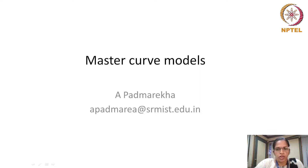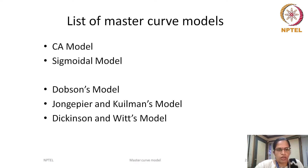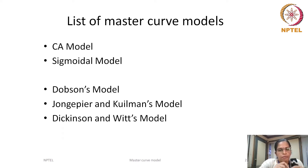This lecture is on master curve models. Previously, we have seen two master curve models: one is the CA model and the other is a sigmoidal model. These two models are used in the performance grading of binder and in the mechanistic empirical design of flexible pavement. We will see three more commonly used models: the Dobson model, John Gepiere and Kuhlman's model, and Dickinson and Witts model. Understanding these models will help you select the suitable shift factor across different ranges of frequency.